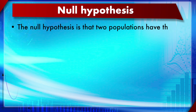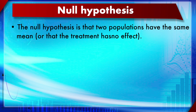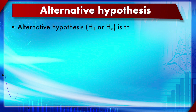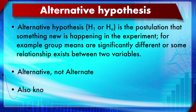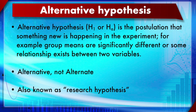The null hypothesis states the treatment has no effect, while the alternative hypothesis (H1 or HA) postulates that something new is happening in the experiment — means are not equal, proportion is not 1, or there is a correlation between two variables. The alternative hypothesis is also known as the research hypothesis or experimental hypothesis; it is the reason you do a scientific experiment.